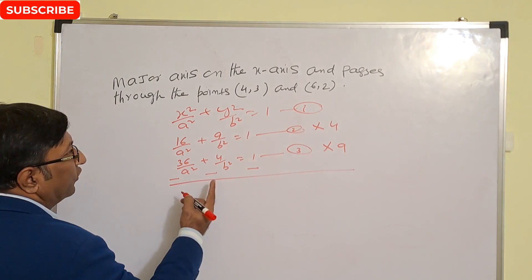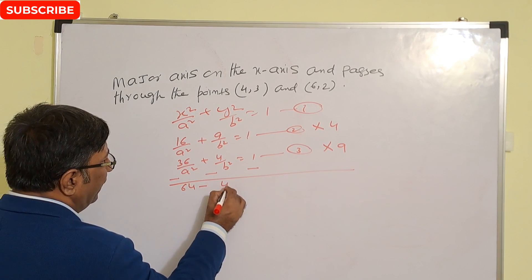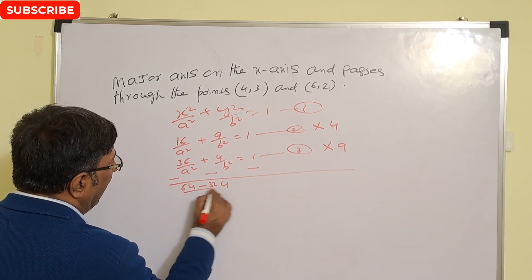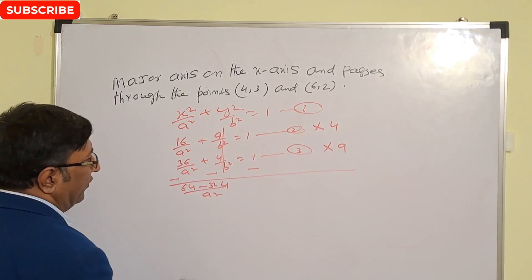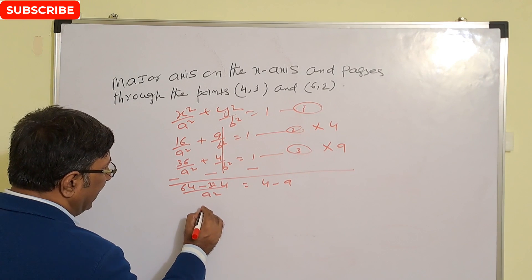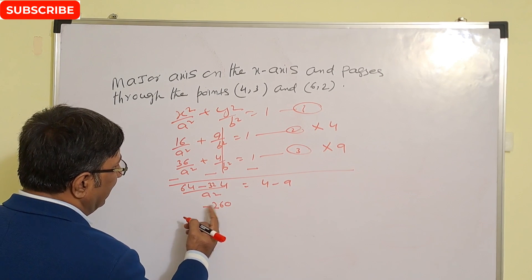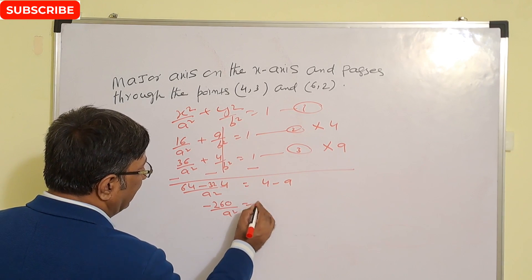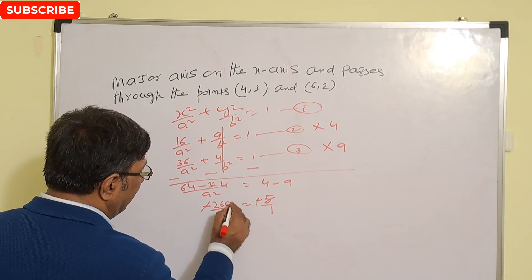Multiplying equation two by 4 gives 64 upon a² plus 36 upon b² equal to 4. Multiplying equation three by 9 gives 324 upon a² plus 36 upon b² equal to 9. Subtracting, the b² terms cancel out, giving 260 upon a² equal to 5, after simplifying the left-hand side difference 64 minus 324 and right-hand side 4 minus 9 equals negative 5.